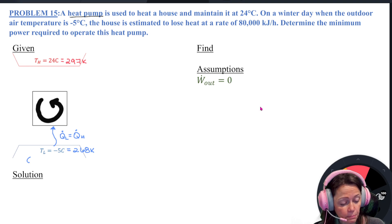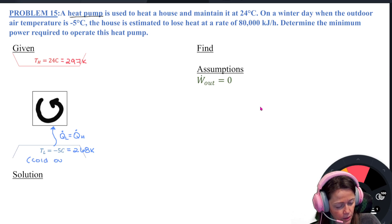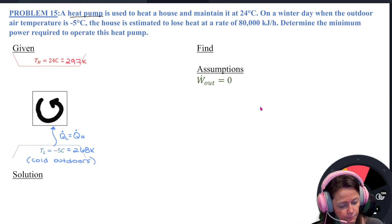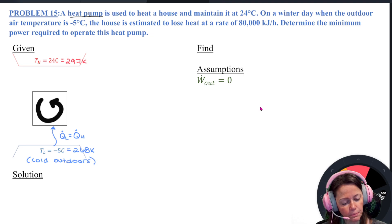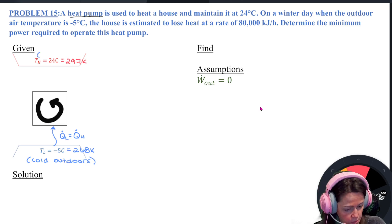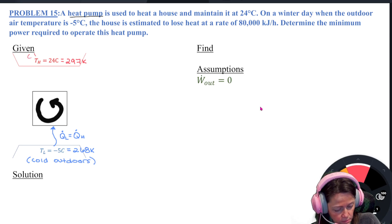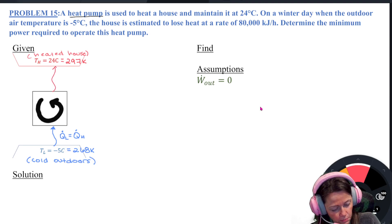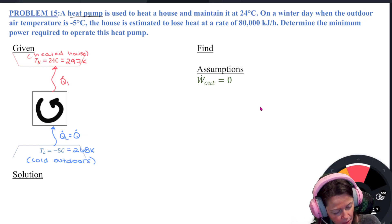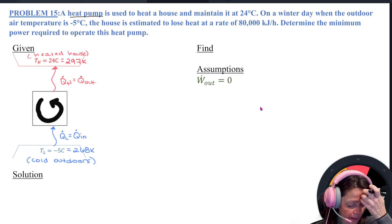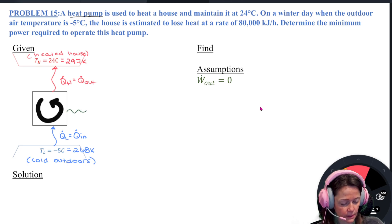With a heat pump, the arrows go the same way as a refrigeration cycle. The heat pump is heating up your house in the winter, so this is the cold outdoors. There's Q dot H or Q dot out going to the house, and the Clausius statement says I have to have a W dot N. The house is estimated to lose heat at a rate of 80,000 kilojoules per hour. We want to find the minimum power required — W dot N minimum — to operate that heat pump.